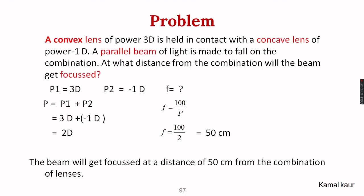Problem: A convex lens of power 3 D is held in contact with a concave lens of power −1 D. Combined power = 3 + (−1) = +2 D, so the combination behaves as a convex lens. A parallel beam of light will converge at a point. To find the focal length: f = 100/P = 100/2 = 50 cm. So the beam gets focused 50 cm from the combination.